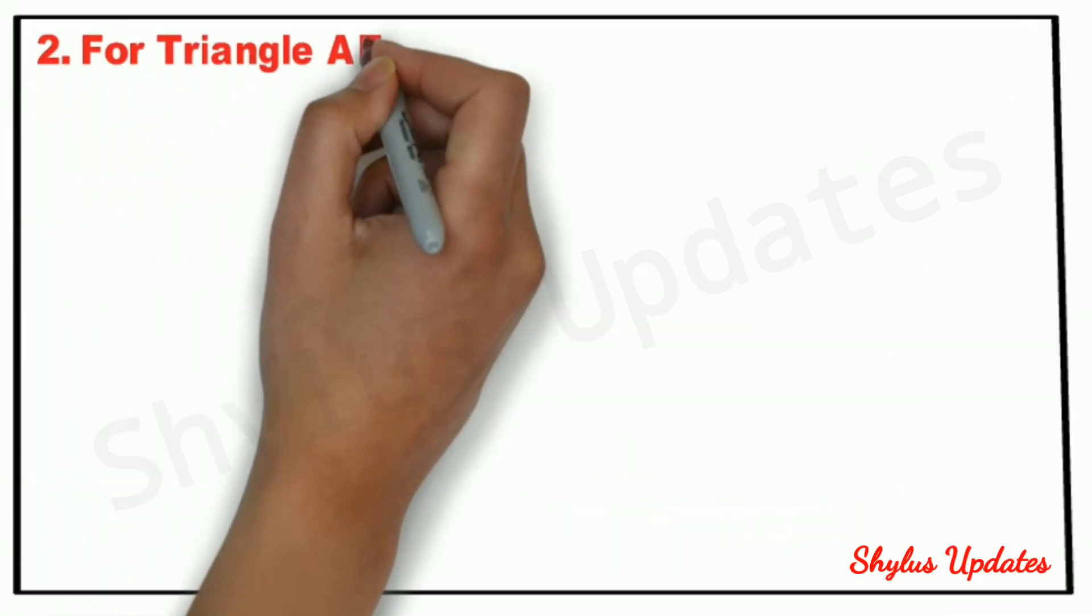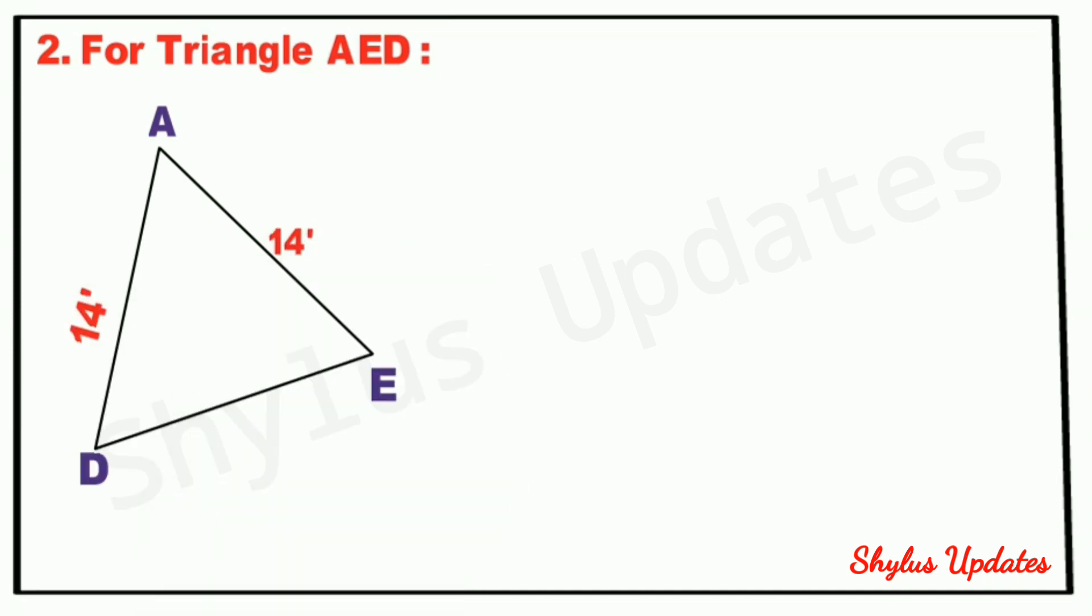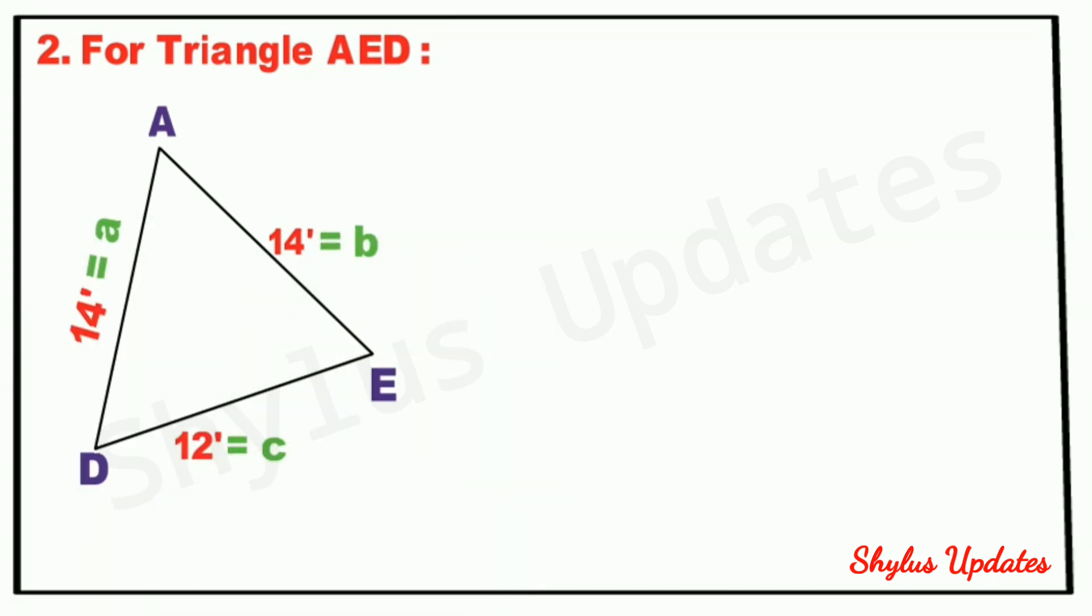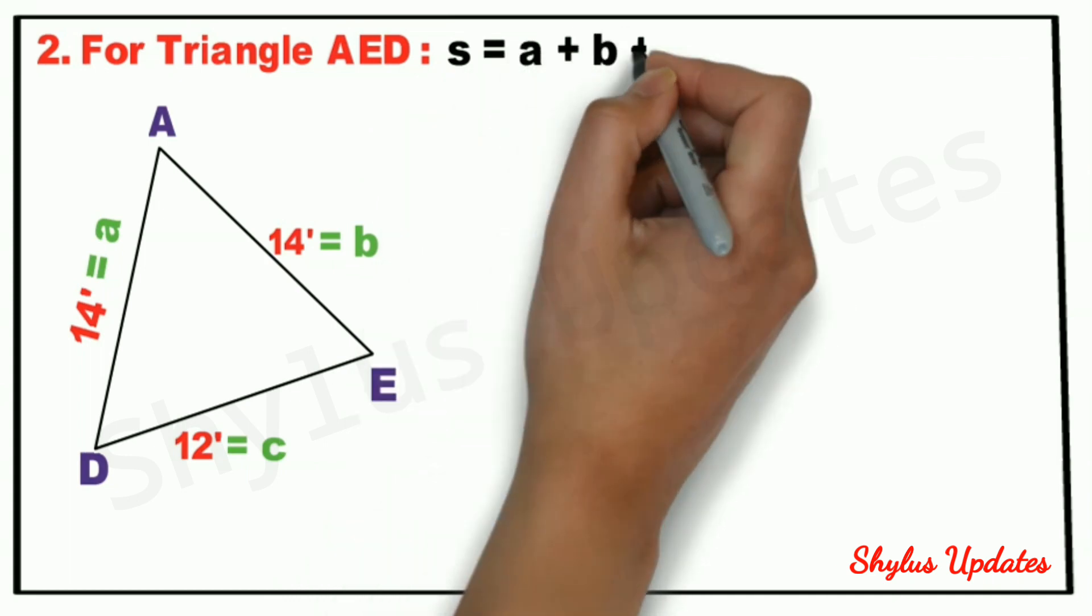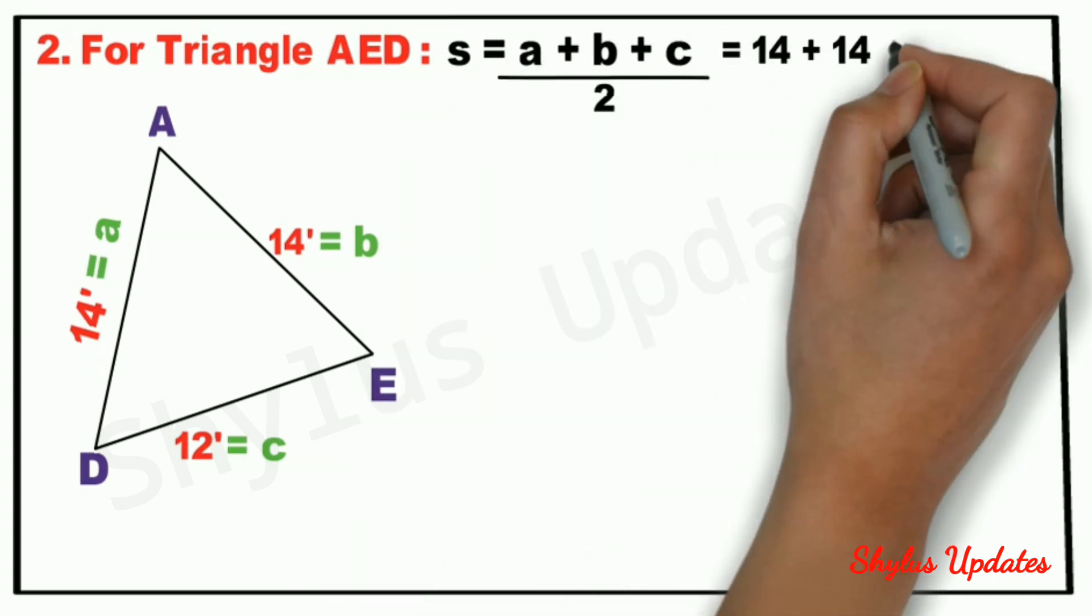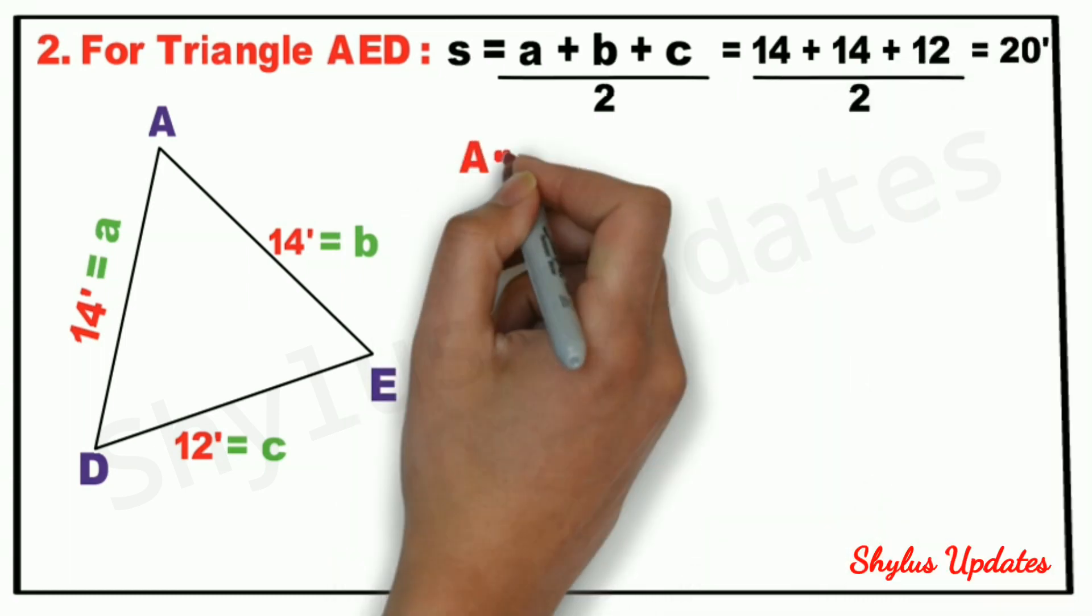Next, for triangle AED: AD equals 14 feet, AE equals 14 feet, and DE equals 12 feet. S equals a plus b plus c upon 2. When we substitute the values, we get the answer 20 feet.